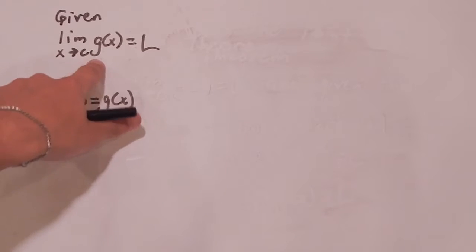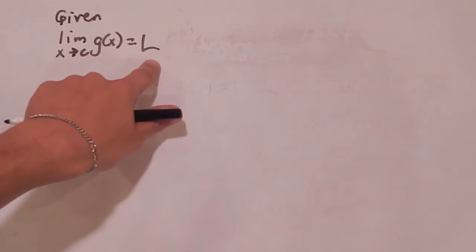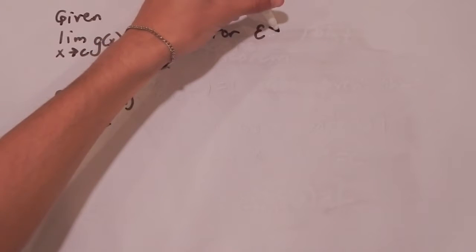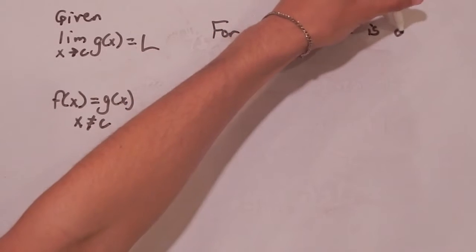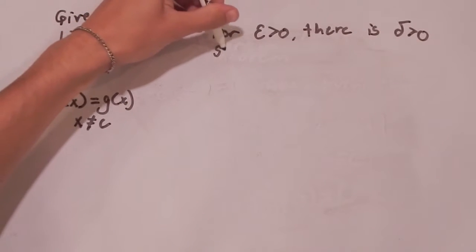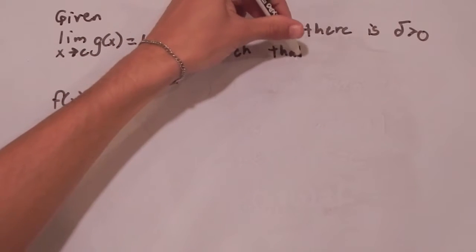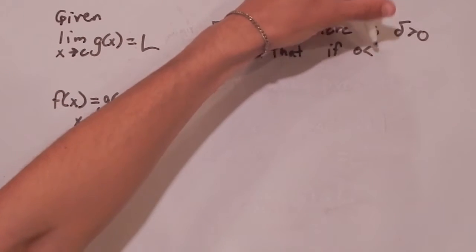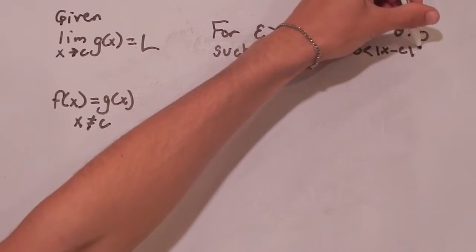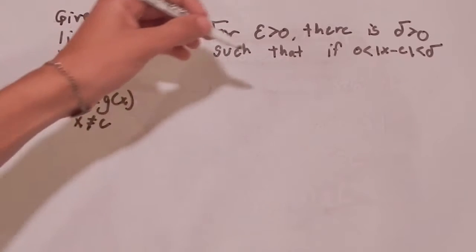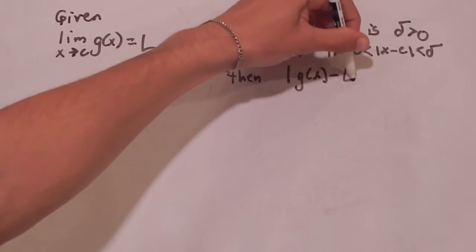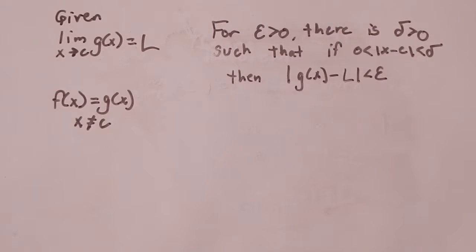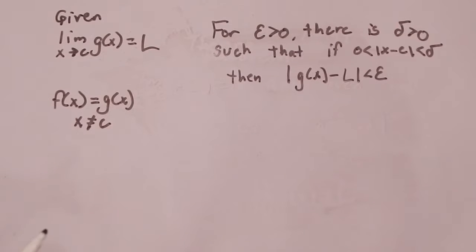So let's look at the implications of this limit in terms of epsilon and delta. So this limit exists, and that means in epsilon-delta form that for any epsilon greater than zero, there is a delta value also greater than zero, such that if zero is less than the absolute value of X minus C is less than delta, then the absolute value of G of X minus L is less than epsilon. And I know you guys have seen this a thousand times, but we're still going to go over it again.